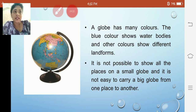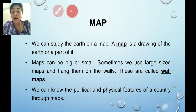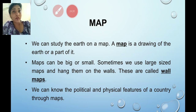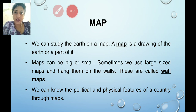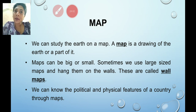So let us see the second measure for studying the earth — that is the map. By using a map, we can study the whole earth. A map is a drawing of the earth or a part of it.